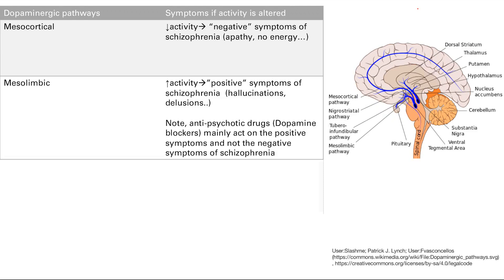It's important to note that antipsychotic drugs — the dopamine antagonists, the blockers — mainly act on the positive symptoms and not on the negative symptoms of schizophrenia. This makes sense: you're blocking dopamine, so it works where there's increased activity, which is the positive symptoms. Where there's already decreased activity, blocking it further won't make things better.